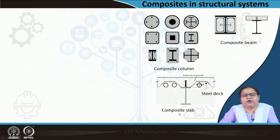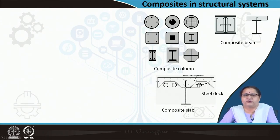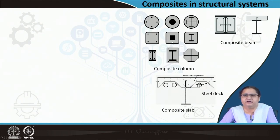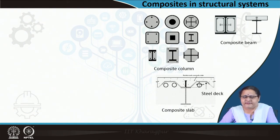We come to another important aspect: using composites in the structural system. In the pictures, black denotes the iron or metal part and gray is the concrete. These are not like regular reinforcements — you see an I-section, two I-sections together, a solid square bar, a solid core of iron, and within the I-section there are further reinforcement bars filled with concrete. These are examples of composite columns.